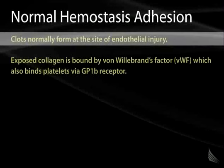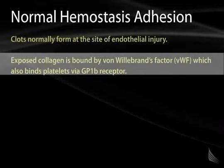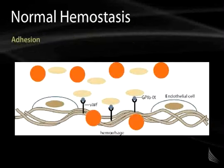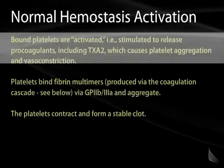Clots normally form at the site of an area of endothelial injury, and the exposed collagen at that injured site is bound by von Willebrand factor, which binds platelets via the glycoprotein 1B receptor. In this graphic representation of the endothelial cell, you can see that the normal contiguous membranes of the endothelial cells are disrupted, exposing free collagen underneath, which exposes the von Willebrand factor to the platelets — seen as the brownish blobs floating through the red cell matrix.